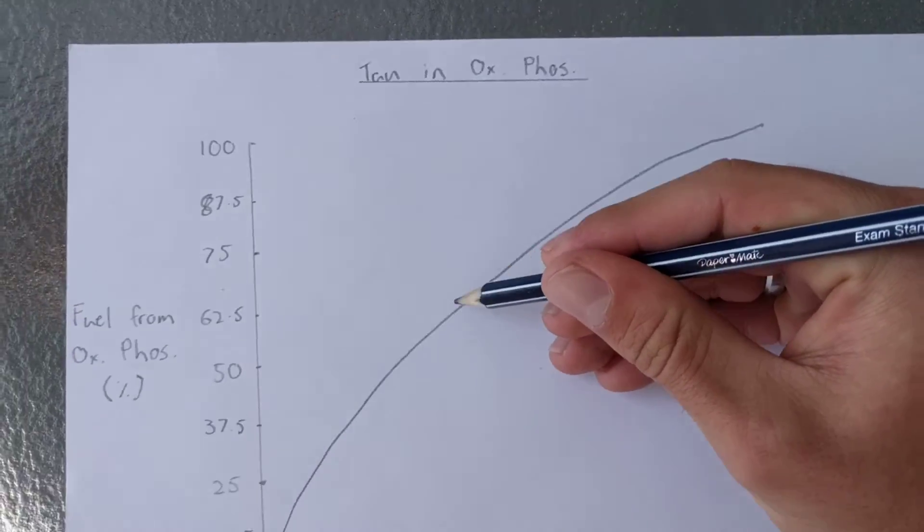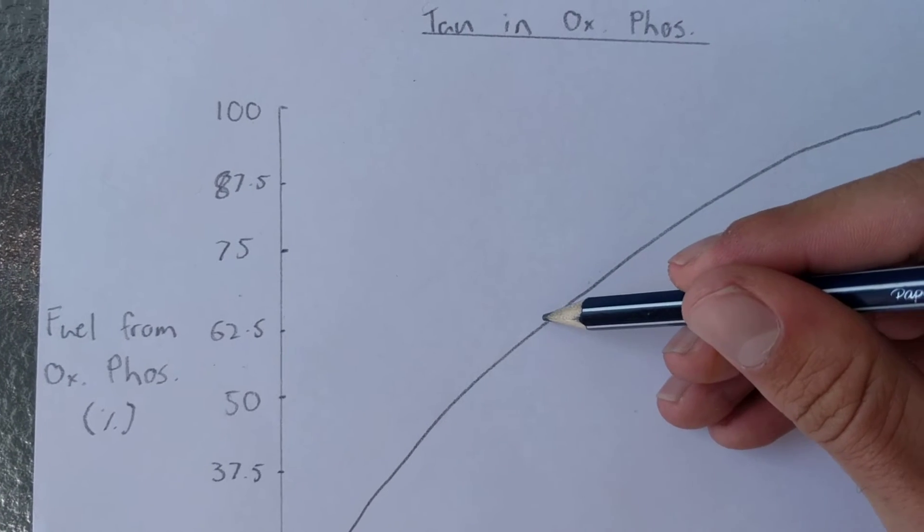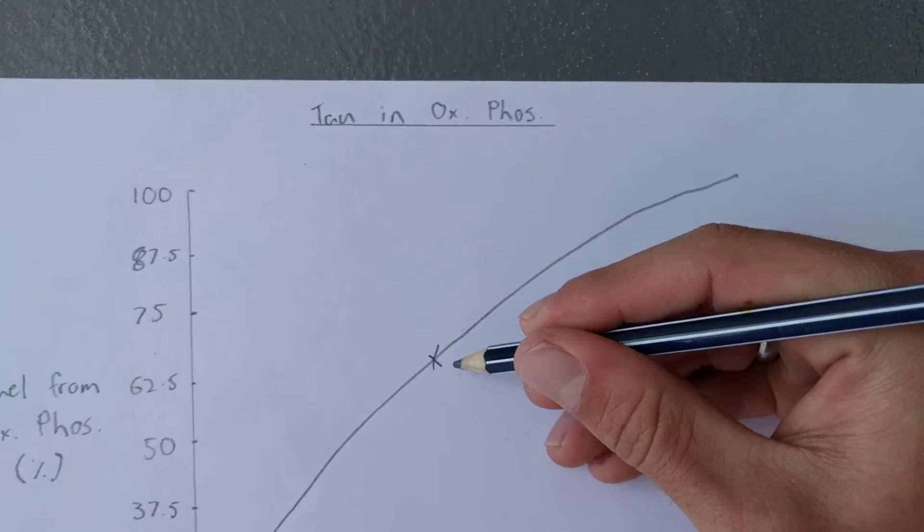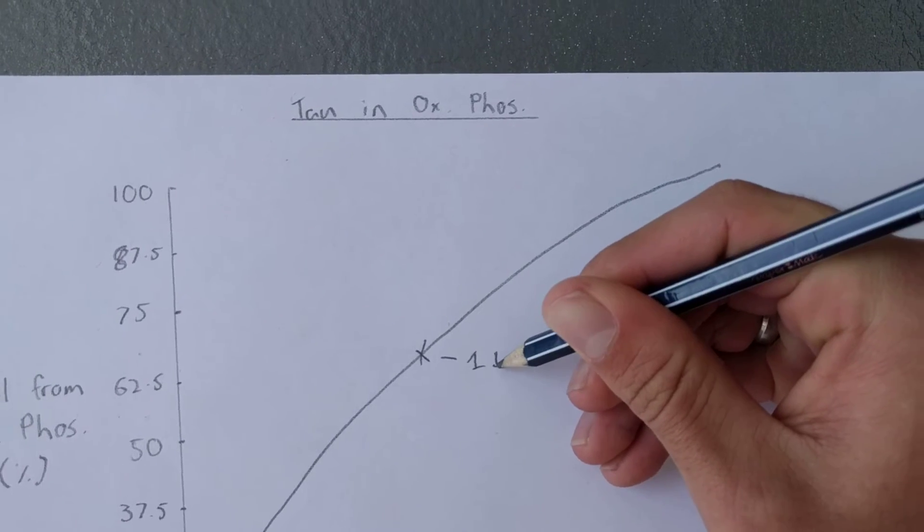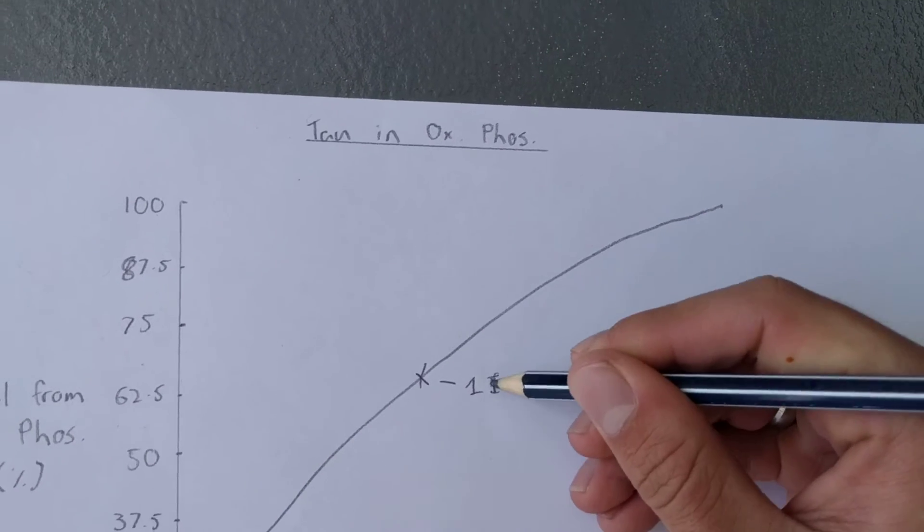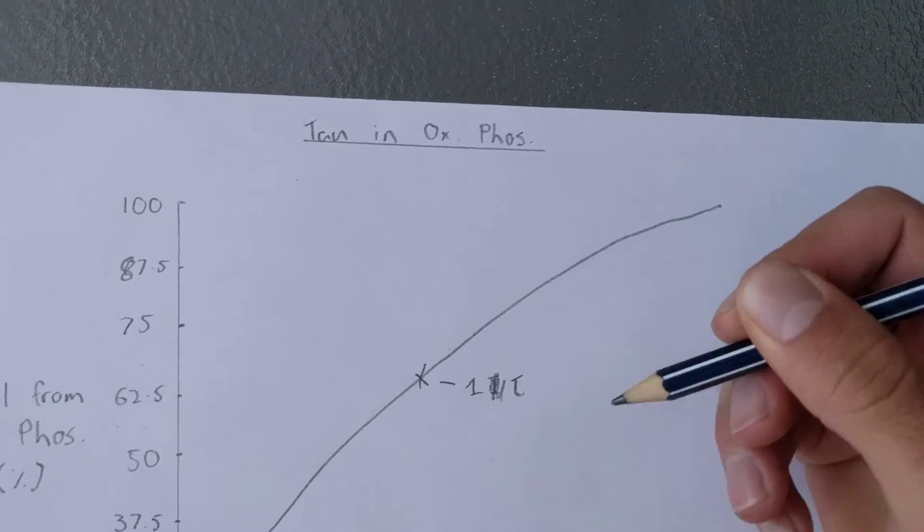So we go across to 63, make a little mark there, and that is one tau.